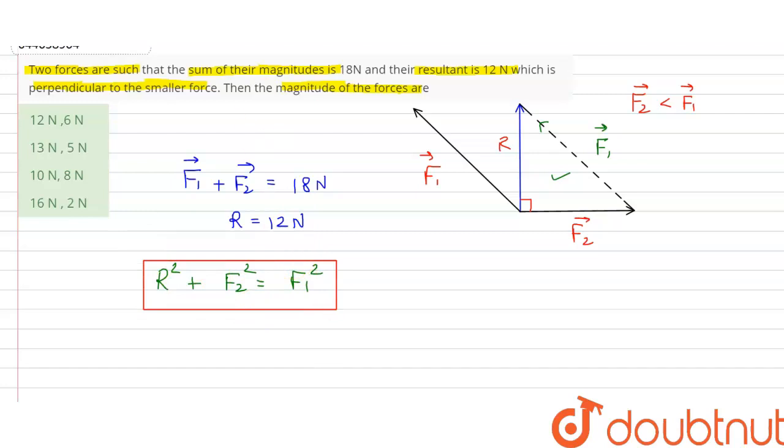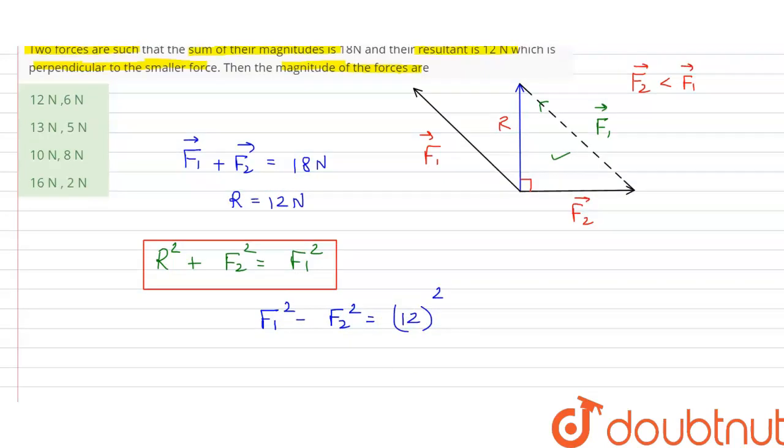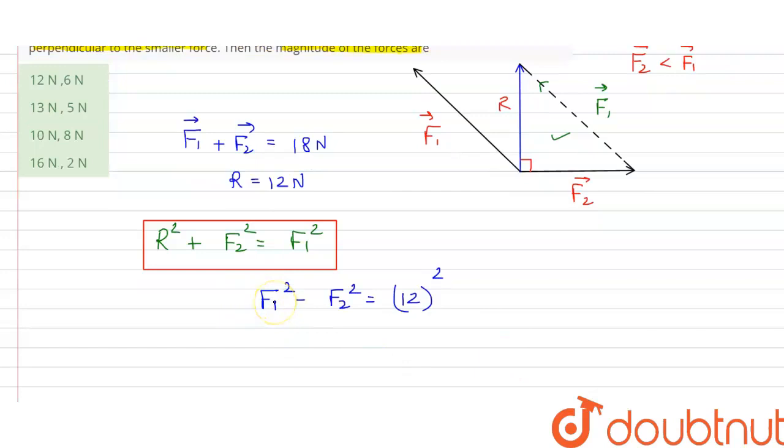From here, if we write the value of F1 squared minus F2 squared, this is equal to R squared and R is 12 Newton, so it is 12 squared. Now if we apply the formula that is a squared minus b squared, then F1 vector plus F2 vector...